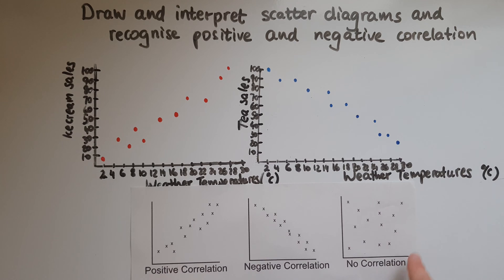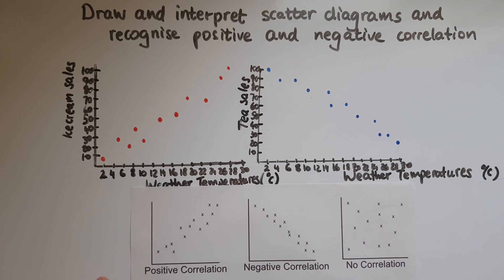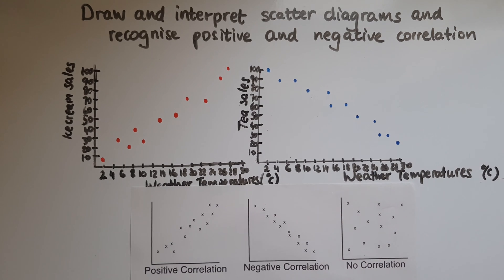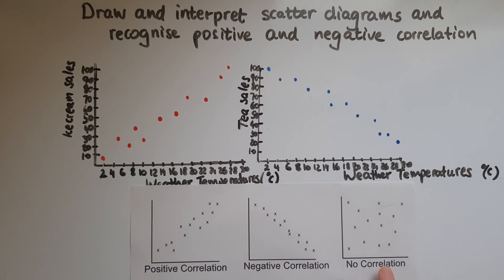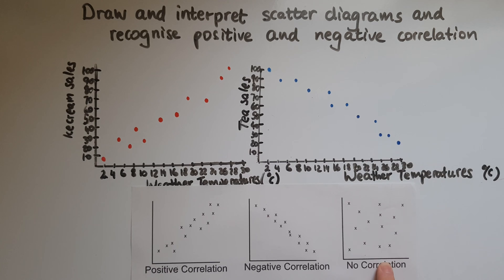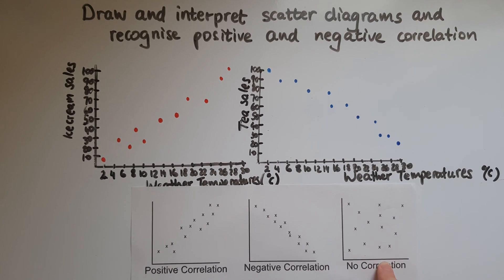But we've got some scattered points, scattered dots around the graph. So that shows that there is no clear correlation between the two variables. So this actually shows two things that are not really related to each other.